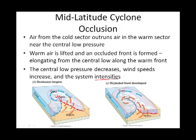Mid-latitude cyclones historically have been known to really wreak havoc. Like other weather systems, they vary in intensity. What can happen is you can have a very steep pressure gradient associated with your central low pressure — very tight isobars on your weather map — which can produce very strong winds. The Unidome at the University of Northern Iowa, for instance, got flattened by this sort of weather system.